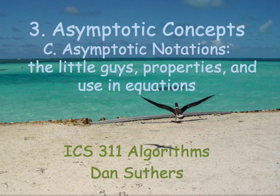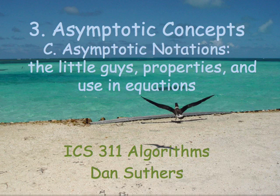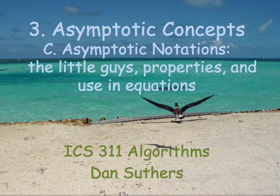Okay, we've just reviewed Big O, Big Omega, and Theta. In this section, I'm going to introduce the little guys—little o and little omega—which are a stricter form of inequality that don't allow equality. And we're going to look at some properties of the asymptotic notations, useful facts about them, and ways we use them in equations.